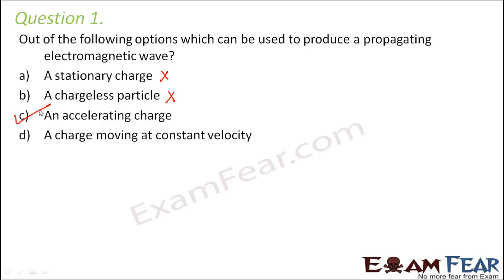How about option D — a charge moving at constant velocity? In this case, even though we have a charge, it is moving at constant velocity, meaning acceleration is equal to zero. So even though we have an electric field and a magnetic field, they do not change with time. Therefore, option D is also not the right option.